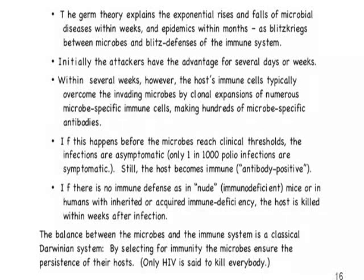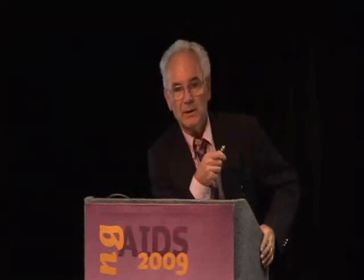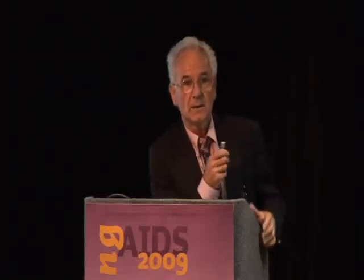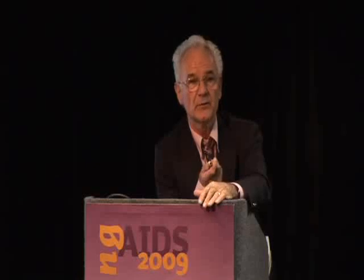If there is no immune system — like in nude mice, which are an experimental system born immunodeficient — or in humans with inherited or acquired immune deficiency, the host is killed within days after infection. The nude mouse, if infected with any common strain of virus or bacteria, is dead within a few days. You probably remember the bubble boy in the newspapers — a boy born without T-cells and B-cells, with no immune system, who had to live in an autoclaved bubble chamber with autoclaved food. He was actually the son of De Vita, who was director of the Cancer Institute. He lived for 12 or 15 years, until one day he got contaminated and was gone — beyond therapy.